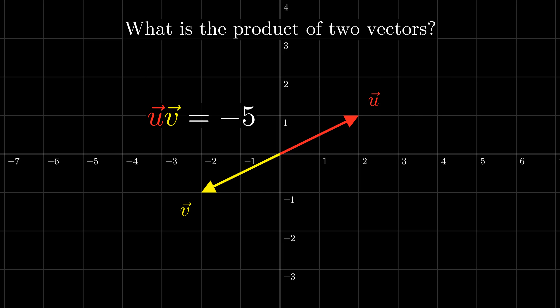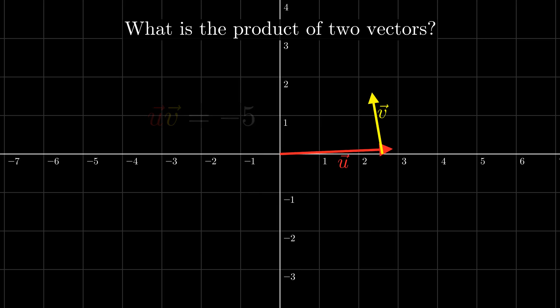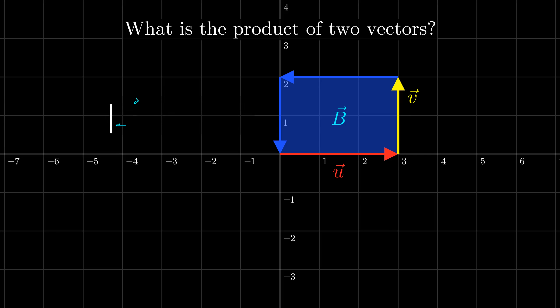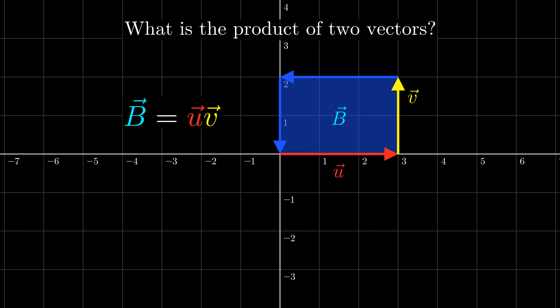Now that we've defined the product of parallel vectors, let's move on to perpendicular vectors. If we were to define the product of perpendicular vectors to be the product of their lengths again, we would lose many useful properties like associativity, so we won't do that. Instead, think about this bivector. The area of this bivector is equal to the product of the lengths of the vectors, so let's define the product of two perpendicular vectors to be the bivector that the two vectors make. We can now extend this by linearity to multiply any two vectors. For example, let's say we wanted to multiply these two vectors.